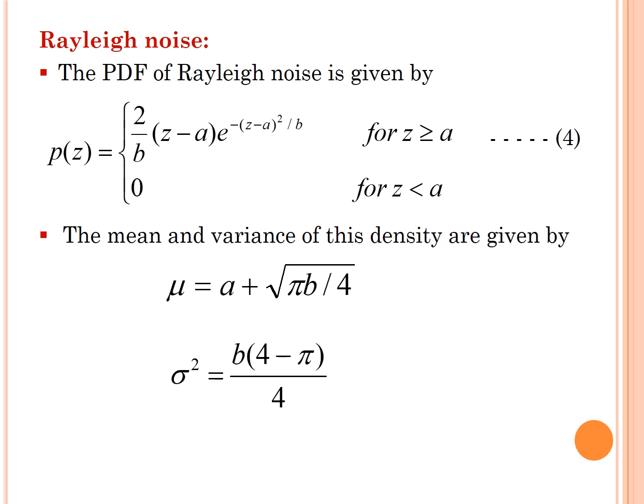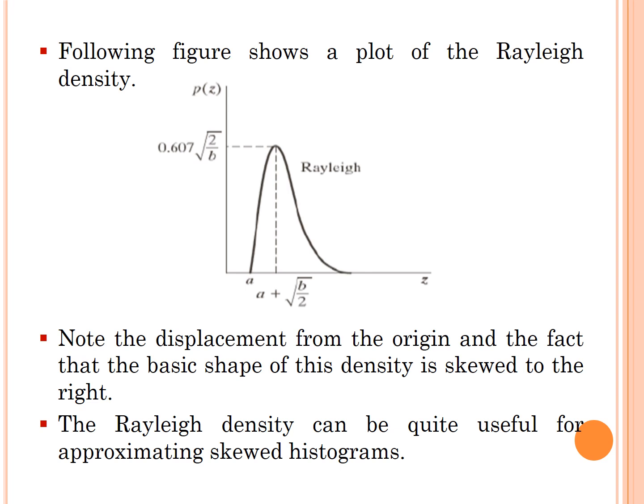Next is Rayleigh noise. The PDF of Rayleigh noise is given by p(z) = (2/b)(z-a)e^(-(z-a)²/b) for z ≥ a, otherwise it is equal to 0 for z < a. The mean and variance of this density are given by μ = a + √(πb/4). Similarly, variance σ² = b(4-π)/4. Here this figure shows a plot of Rayleigh density. Note the displacement from the origin and the fact that the basic shape of this density is skewed to the right. The Rayleigh density can be quite useful for approximating skewed histograms.